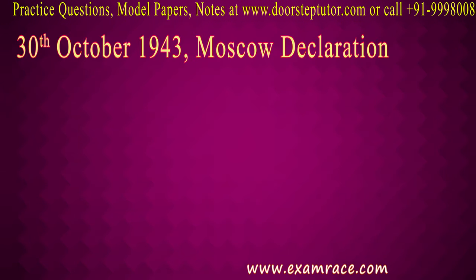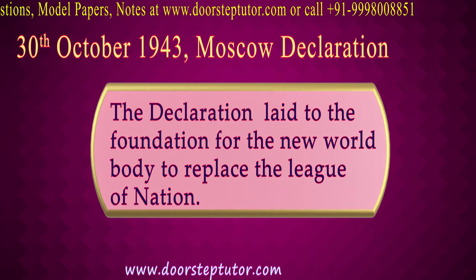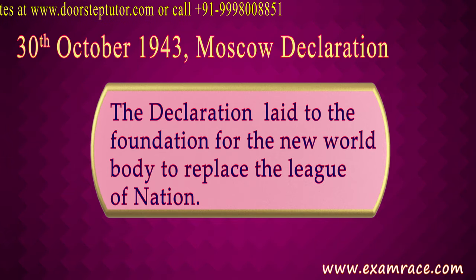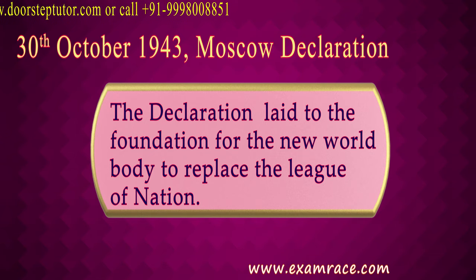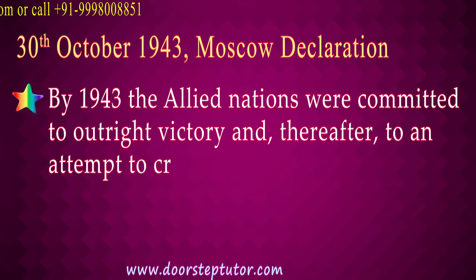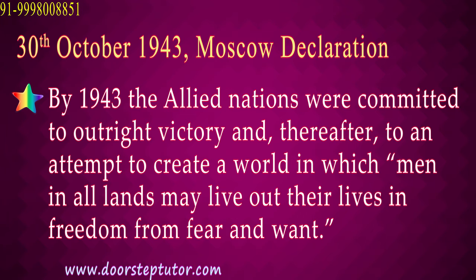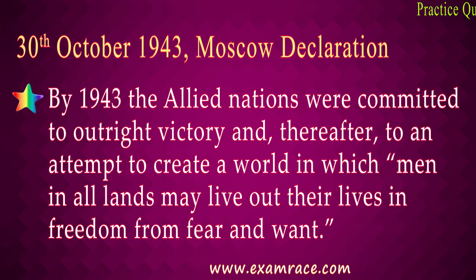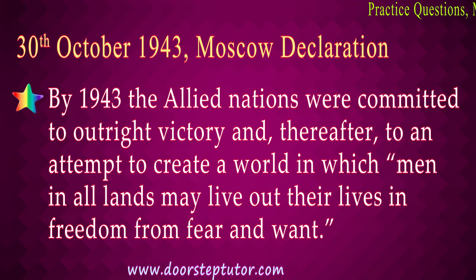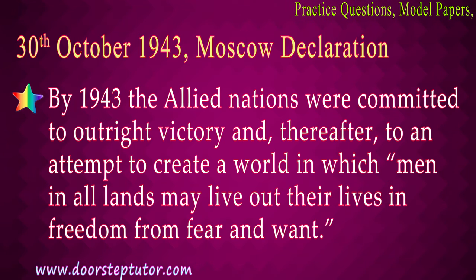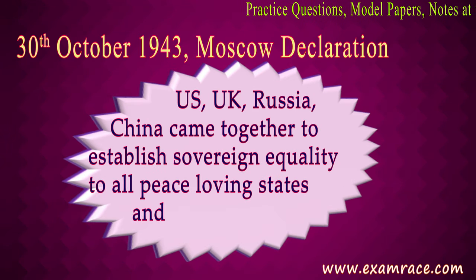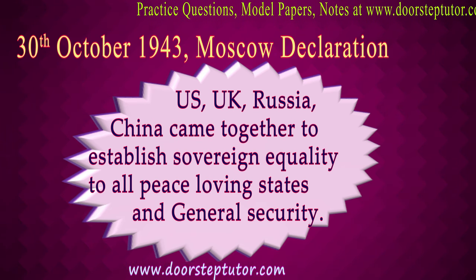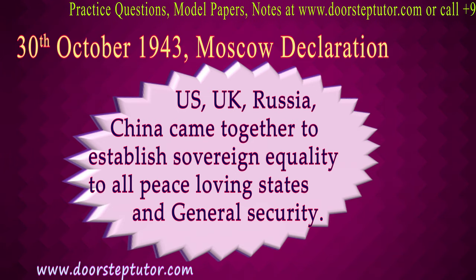On 30th October 1943, the Moscow Declaration took place, mainly formed to replace the League of Nations with something better. By 1943, the Allied nations were committed to victory and attempted to create a world where people in all lands may live out their lives in freedom from fear and want. The US, UK, Russia, and China came together to establish sovereign equality for all peace-loving states and promote general security, while continuing to fight against the Axis powers.